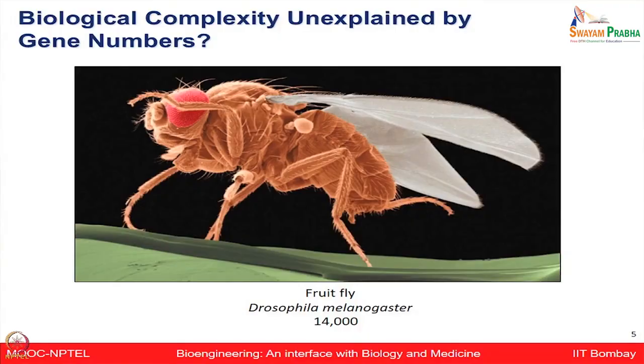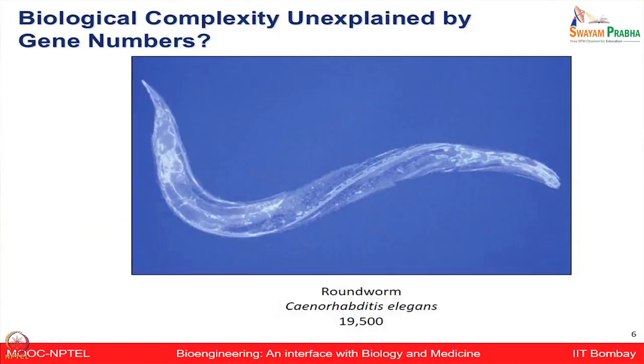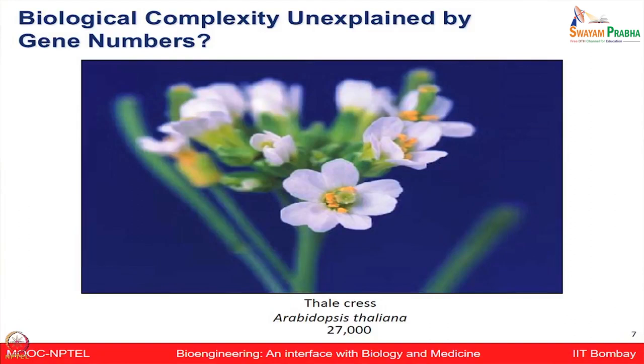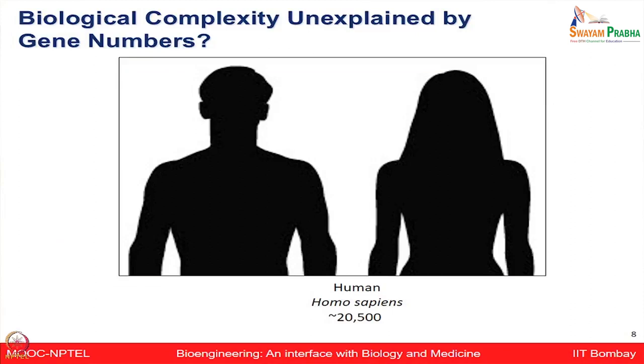Let us first look at what we obtained after doing the genome sequencing projects. If you look at the screen, the fruit fly or Drosophila melanogaster has around 14,000 genes. Roundworm C. elegans has around 19,500 genes. Arabidopsis thaliana or thale cress has around 27,000 genes. And human has around 20,500 genes. If you look at biological complexity from the fruit fly to roundworm to the plant as well as the human, the gene numbers do not proportionate with the biological complexity.